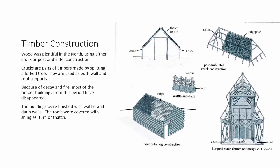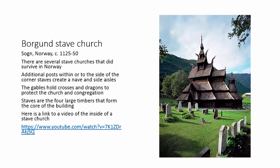They finished the outsides of buildings with wattle and daub walls. There are diagrams showing horizontal log construction, post and lintel cruck construction. When you get to the stave church — looking at a cutaway of a Borgen stave church — you see it has a nave with side aisles, just as Romanesque churches farther south do. The outside shows you the structure of the inside. The staves are four large timbers that make the core of the building, with gables, crosses, and dragons protecting the church.